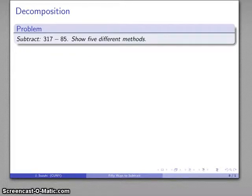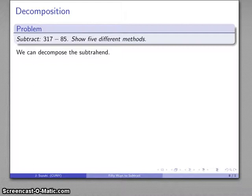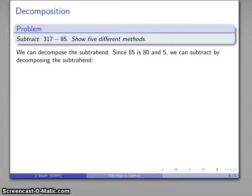How about decomposition? 317 minus 85. That's 317 minus 80, then minus 5. So I'll decompose the subtrahend. I'll subtract 80. Then I'll subtract 5. And there's, again, my remainder.